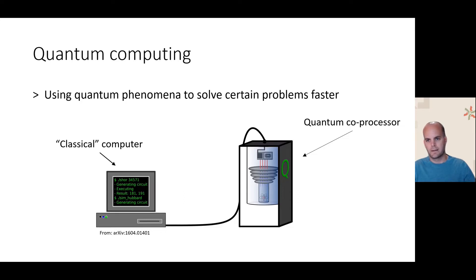To get started, let's take a brief look at what quantum computing is. Very broadly, quantum computing means using quantum phenomena such as superposition, interference, and entanglement to solve computational problems. We do this by running quantum programs on a quantum computer, which consists of two parts: a regular or classical computer, and the actual quantum coprocessor.